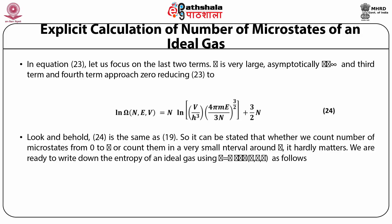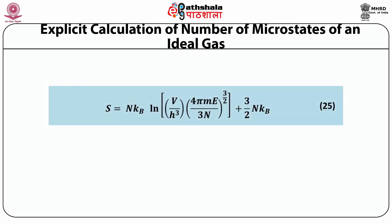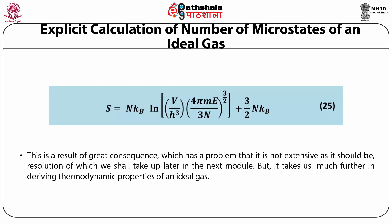We are now ready to write down the entropy of an ideal gas using S = k_B log omega: S(N, E, V) = N k_B · log[(V/h³) · (4πmE/3N)^(3/2)] + (3/2) N k_B. This is a result of great consequence; however, it has a problem — it is not extensive as thermodynamics requires, and resolution of this issue will be taken up in the next module. Nevertheless, it takes us much further in deriving the thermodynamic properties of an ideal gas.